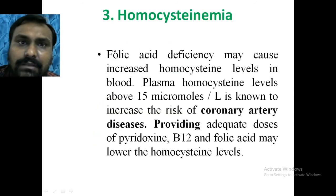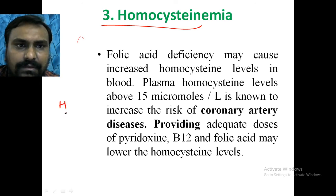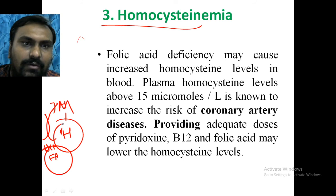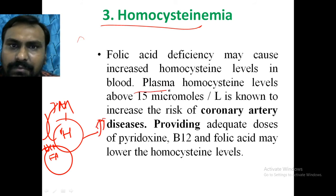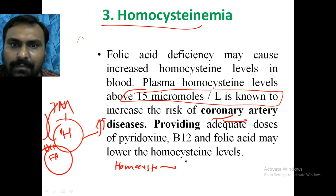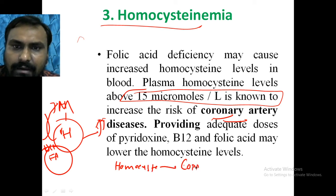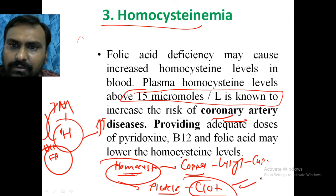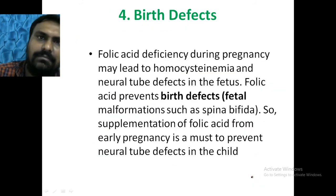Homocysteinemia occurs because homocysteine conversion back to methionine requires vitamin B12 and folic acid. If folic acid is deficient, homocysteine levels rise. If homocysteine is more than 15 micromol per liter, it is a risk factor for coronary artery disease. Elevated homocysteine affects copper ions required for lysyl oxidase, ultimately affecting capillaries. Homocysteine also increases platelet adherence, leading to clot formation, capillary endothelial dysfunction, and ultimately atherosclerosis.